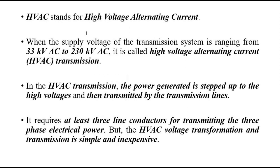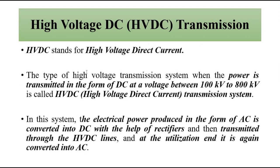In the high voltage alternating current (HVAC) system, the supply voltage of the transmission system ranges from 33 kV AC to 230 kV AC. Step-up and step-down transformers are used at different points as required — step-up transformers increase the voltage and step-down transformers decrease the voltage at particular points in the transmission and distribution network. It requires at least three line conductors for three-phase, and depending on the configuration (star or delta), three or four conductors can be used. HVAC voltage transformation is simple and less costly.